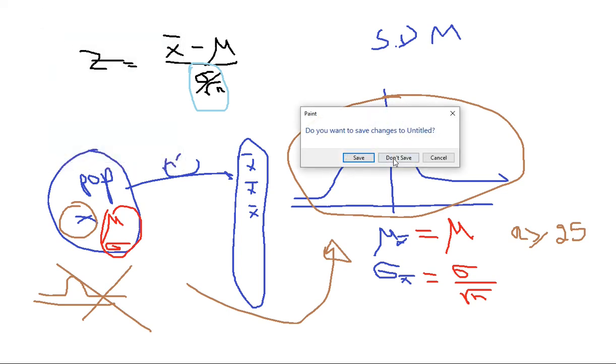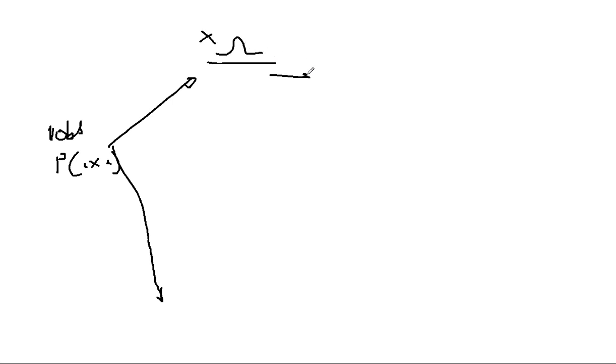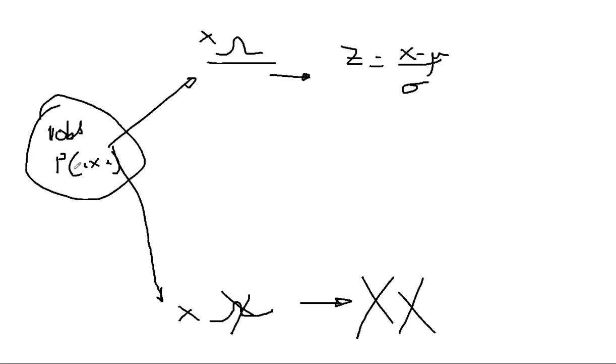Based on that, we have multiple scenarios. The first scenario is when you're interested in only one observation and want to calculate the probability of X between two values. Scenario one: if X has a normal distribution, you can calculate that using the Z formula X minus mu over sigma. Scenario two: if X does not have a normal distribution, for this class we can't do anything and we stop there.